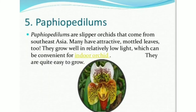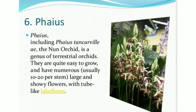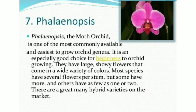Paphiopedilums are slipper orchids from Southeast Asia. Many have attractive mottled leaves. They grow well in relatively low light, which is convenient for indoor orchids, and are quite easy to grow. Phaius, including Phaius and Calanthe — the nun orchid — is a genus of terrestrial orchids, quite easy to grow, with numerous usually 10 to 20 large and showy flowers per stem with tube-like labellums. Phalaenopsis, the moth orchid, is one of the most commonly available and easiest to grow orchid genera, especially good for beginners. They have large showy flowers in a wide variety of colors, with most species having several flowers per stem and many hybrid varieties available.